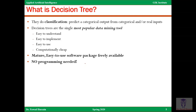Decision trees are the single most popular data mining tool. They are easy to understand, easy to implement, easy to use, and they are computationally cheap. Unlike deep learning, you don't need a lot of computational resources to make a decision tree. They are fairly easy to make, not that complicated, and there are very mature, easy-to-use software packages that are freely available.